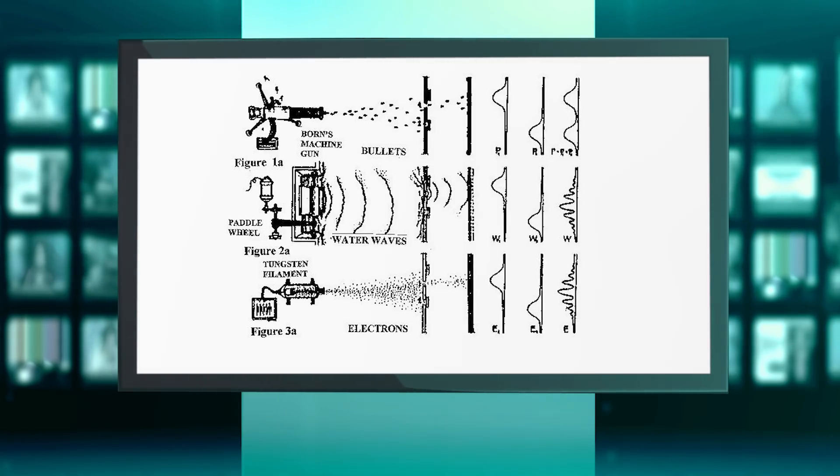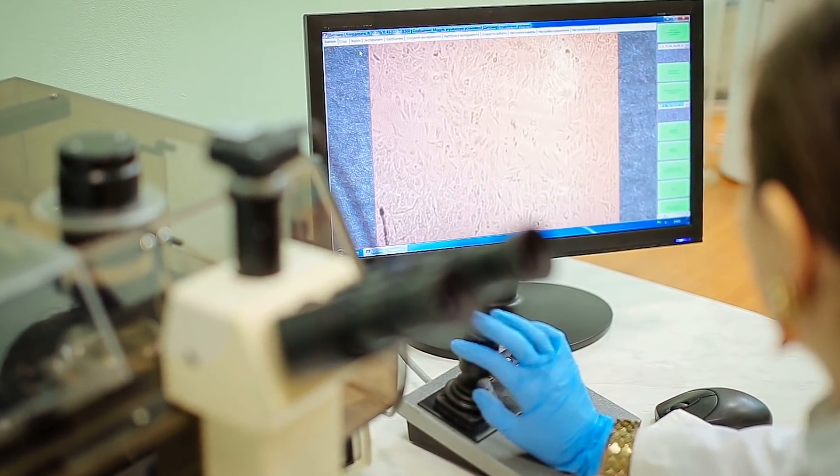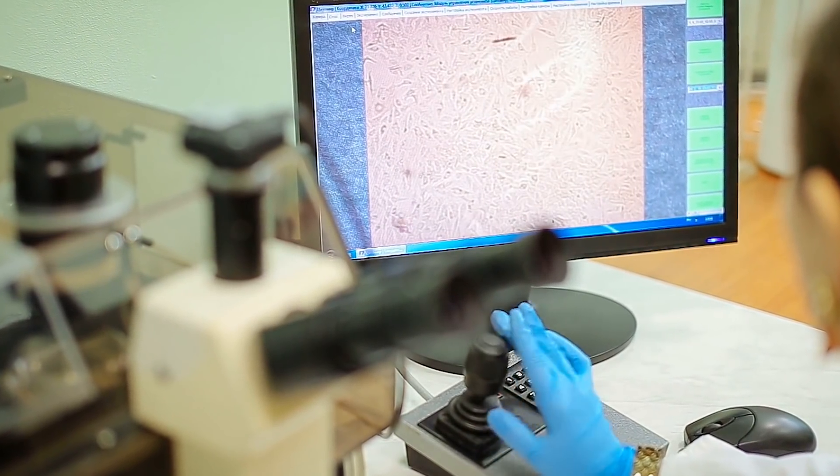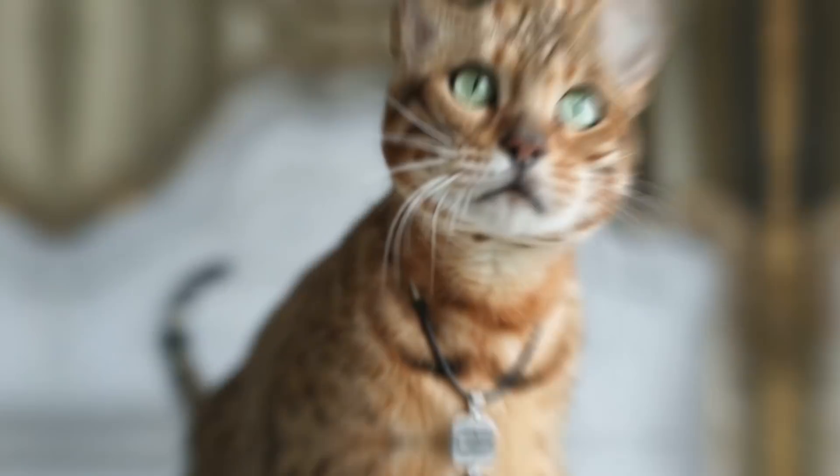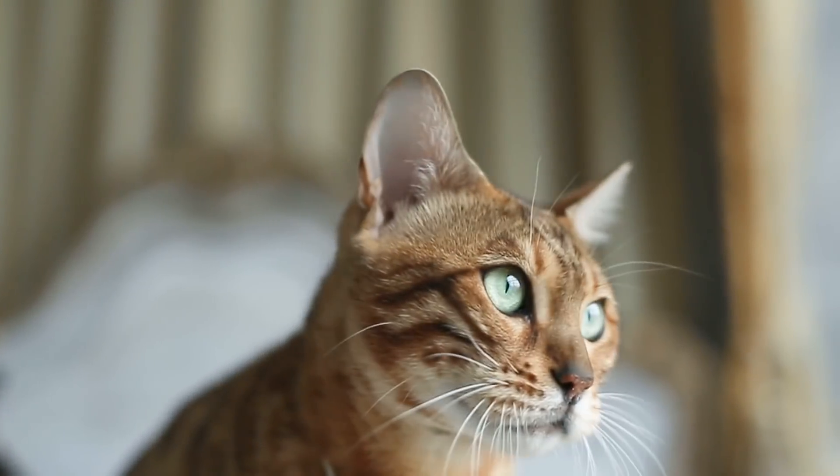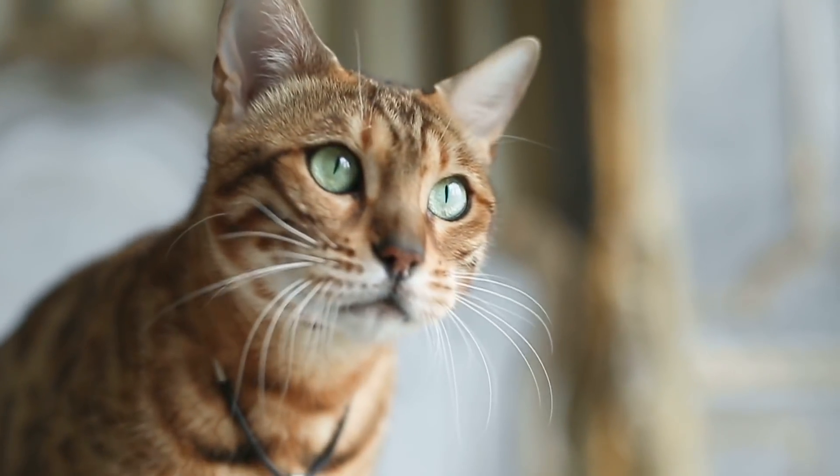One might be tempted to say this is just an interpretation and it need not be correct. However, recent experiments done at top quantum optics labs strongly suggest that the Copenhagen interpretation is correct. A very graphic illustration of the apparent absurdity of quantum physics and the Copenhagen interpretation is the Schrödinger cat paradox.